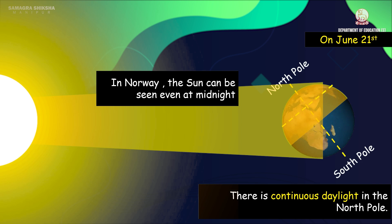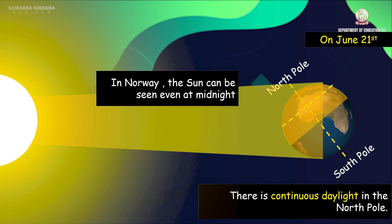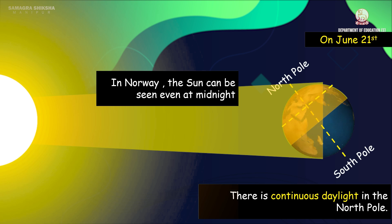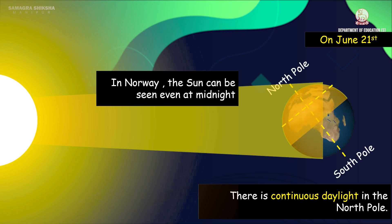This phenomenon is called the midnight sun. In Norway, the sun can be observed at midnight, and this is why it is called the midnight sun.